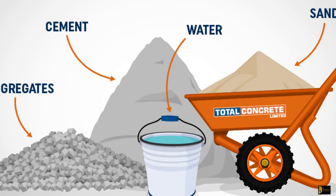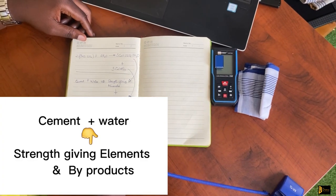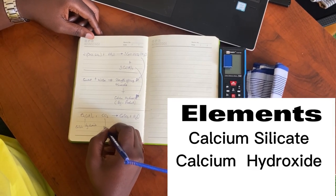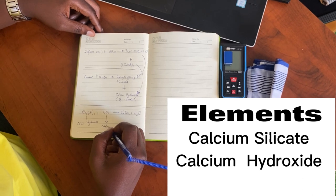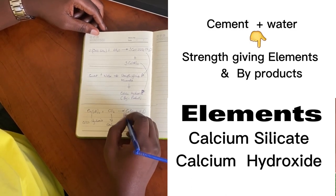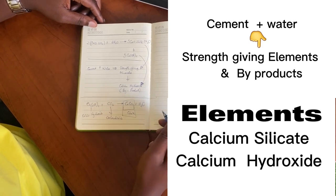First of all, we have cement, water, stones, and aggregate — that is what we generally use to make our concrete and mortar. The chemical reaction that gives us that hard substance is a reaction between cement and water. When cement reacts with water, they form two main elements: calcium silicates and calcium hydroxide. The calcium silicates are the strength-giving elements of the concrete, while calcium hydroxide is really just a byproduct of the reaction.